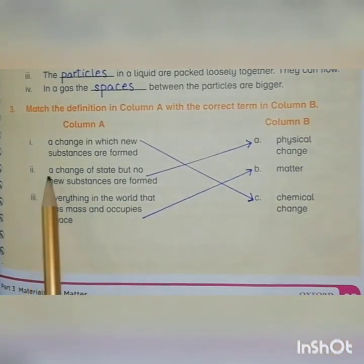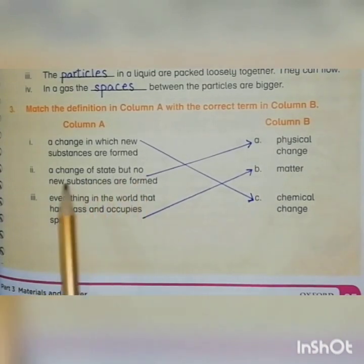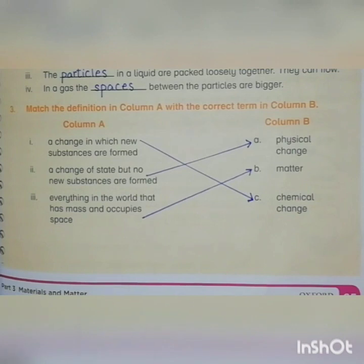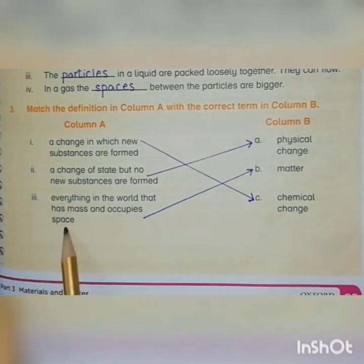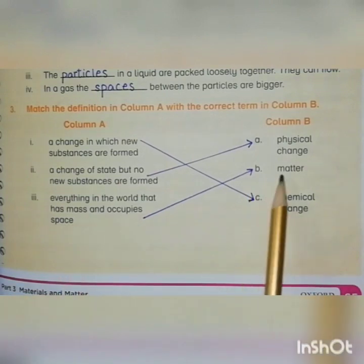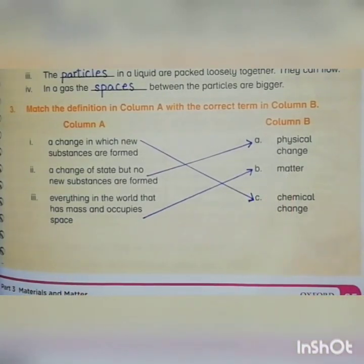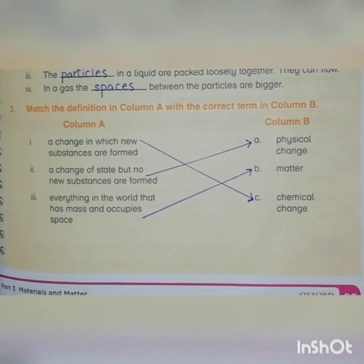Second: A change of state but no new substances are formed. The answer is Option A, Physical change, because during physical changes only physical appearance changes and no new substances are formed. Third: Everything in the world that has mass and occupies space. The answer is Option B, Matter. Everything in the universe that has mass and occupies space is called matter.